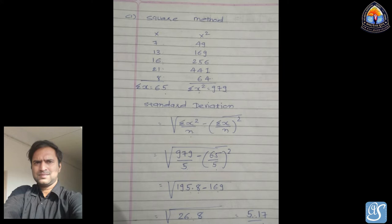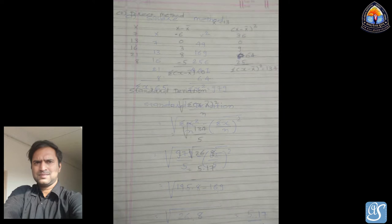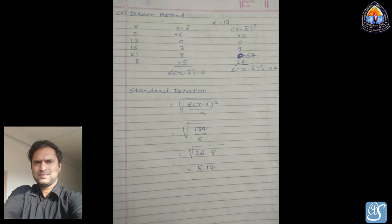The second method is the direct method. Here we first find x − x̄, where x̄ = 13. So for x = 7: 7 − 13 = −6; for 13: 0; for 16: 3; for 21: 8; for 8: −5. Σ(x − x̄) = −6 + 0 + 3 + 8 − 5 = 0.